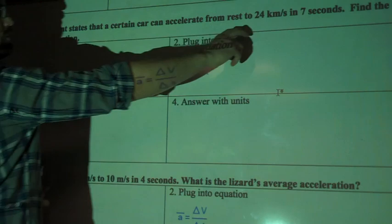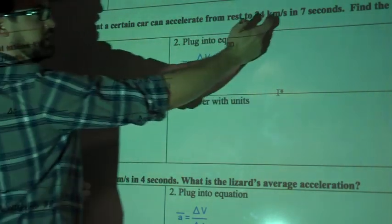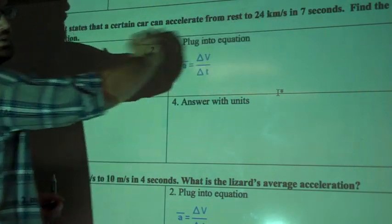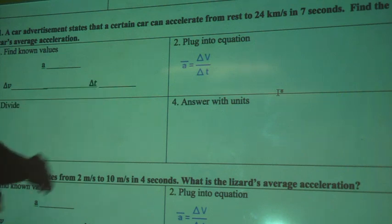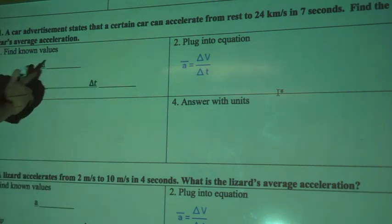Okay, so first thing to note, we've got 24 kilometers per second, but what's cool about that is at least we have seconds and seconds here. So we can still use this unit, we don't need to transfer it or change it to meters per second. Let's find our known values first.